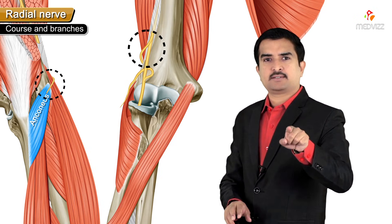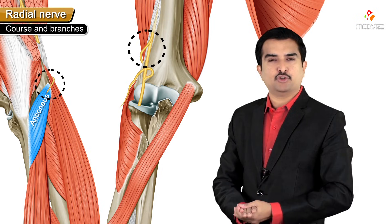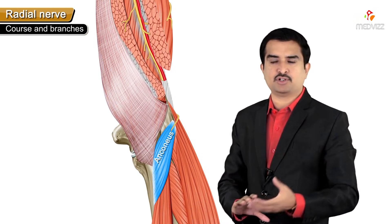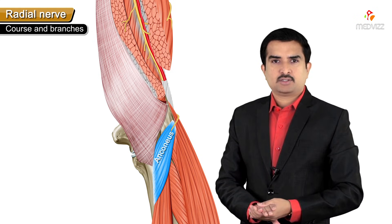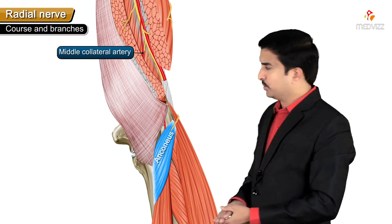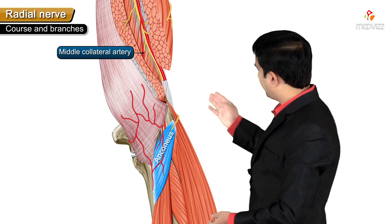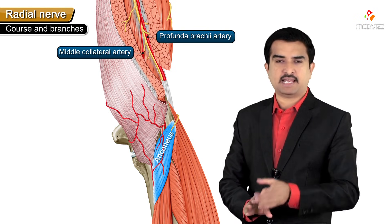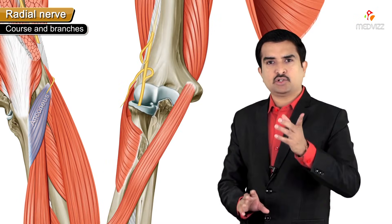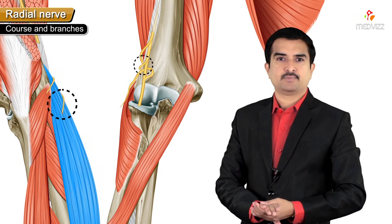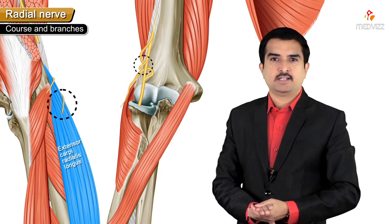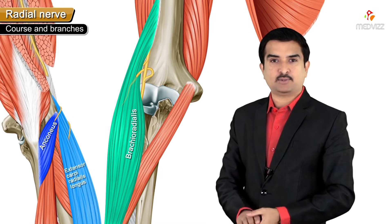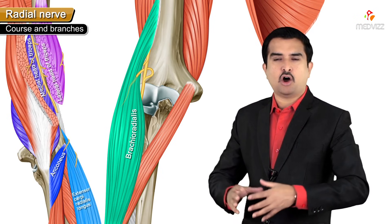The anconeus is supplied by the direct branch of the radial nerve. Regarding its vasculature - an important exam point - the anconeus is supplied by the middle collateral artery, which is the direct descending branch from the profunda brachial artery. At this location, the radial nerve also gives off a branch to the extensor carpi radialis longus. So brachioradialis, extensor carpi radialis longus, anconeus, and the medial and lateral heads of triceps are all supplied by direct branches before the radial nerve enters the elbow.